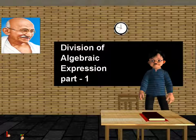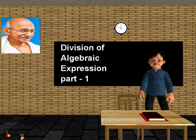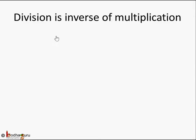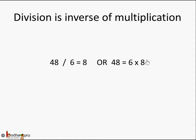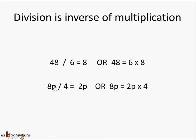In this lesson we are going to learn how to perform division of algebraic expressions. Division is the inverse of multiplication, just like in natural numbers: 48 divided by 6 equals 8, or equivalently 48 equals 6 into 8. The same applies to algebraic expressions — for example, 8p divided by 4 equals 2p, which is the reverse of 2p into 4 equals 8p.